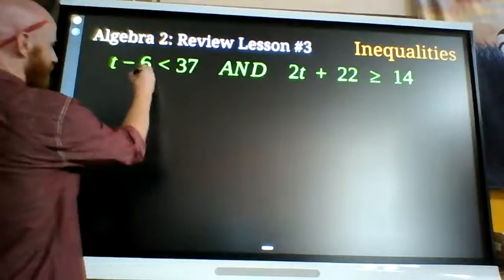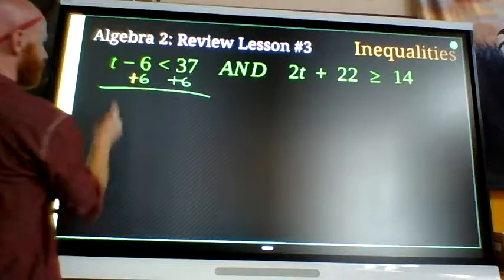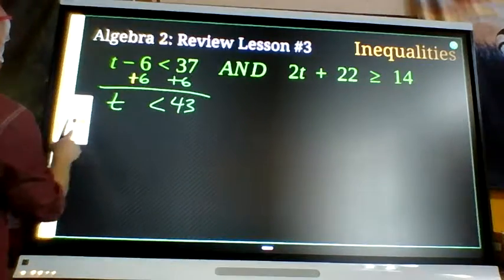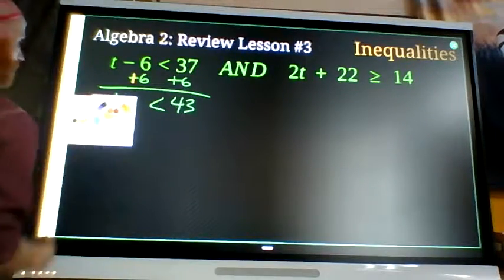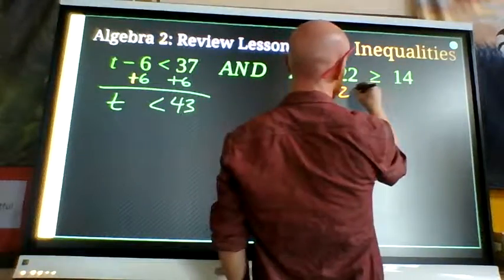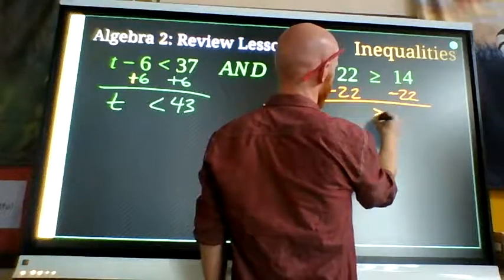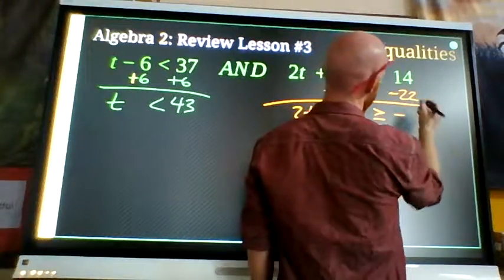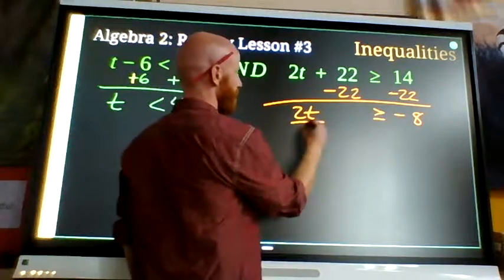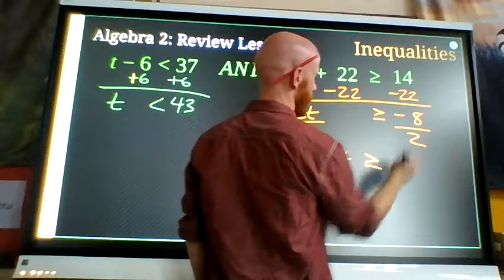So, add 6 to both sides. T is less than 43. Divide by 2 on both sides. T is less than 43 and T is greater than or equal to negative 4.